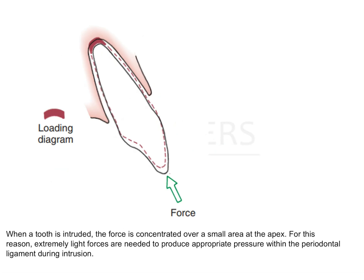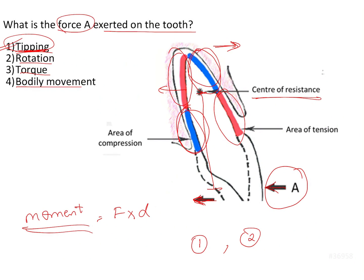Another type of tooth movement occurs when the force is concentrated at the tip, which is when intrusion or extrusion type of tooth movement is seen. The entire force gets concentrated on one point over the area of the apex. This is why intrusion and extrusion forces need to be extremely light — no other PDL area is withstanding the forces, only the apex. Since this is a very small area that must withstand the applied force, forces need to be low. Based on the force and loading diagram shown, the type of tooth movement identified is tipping movement.